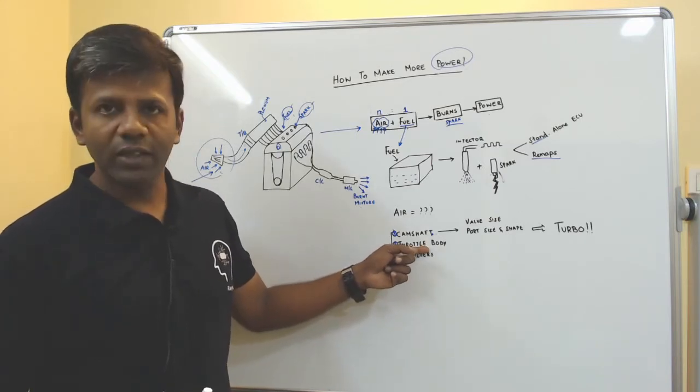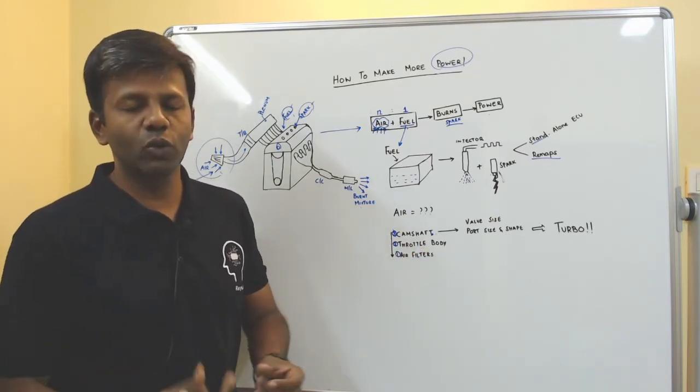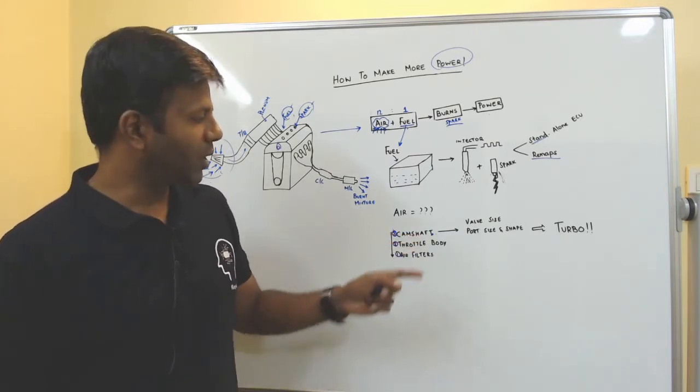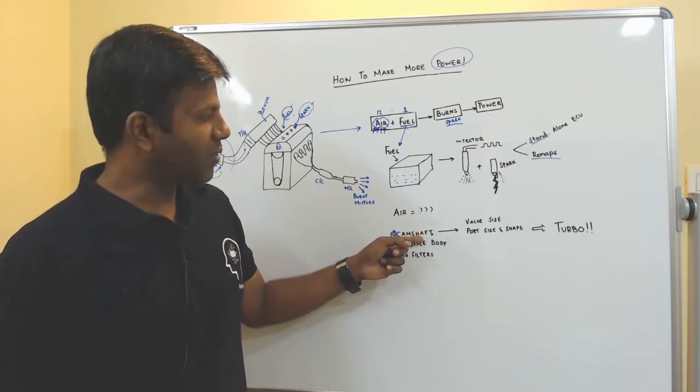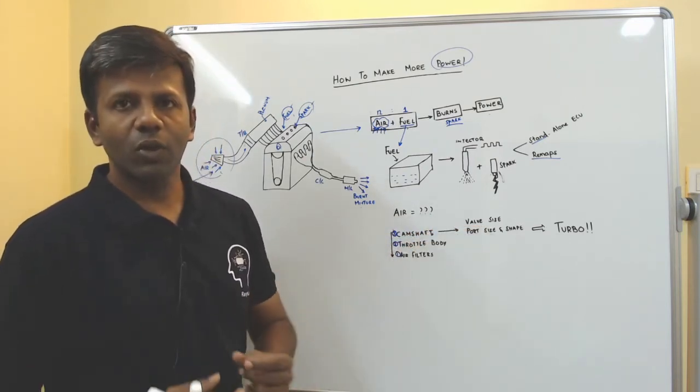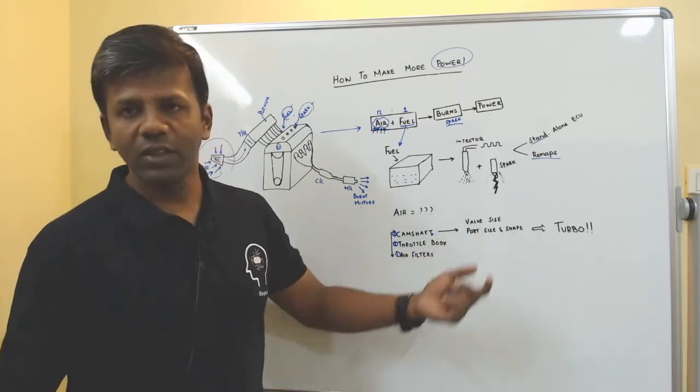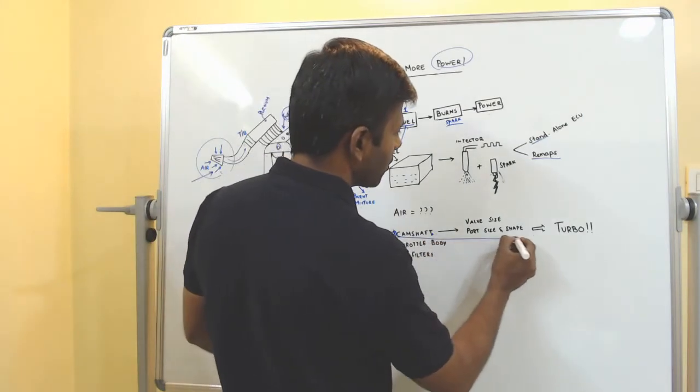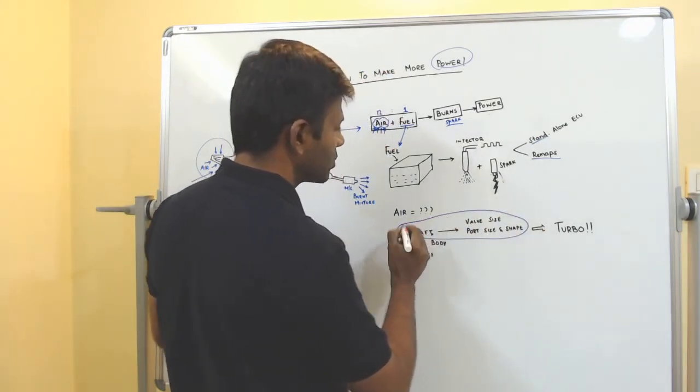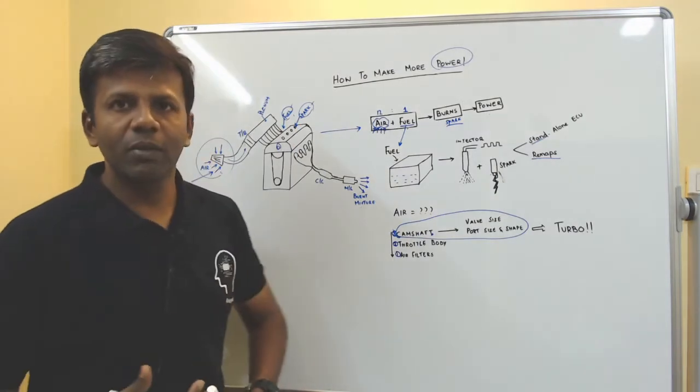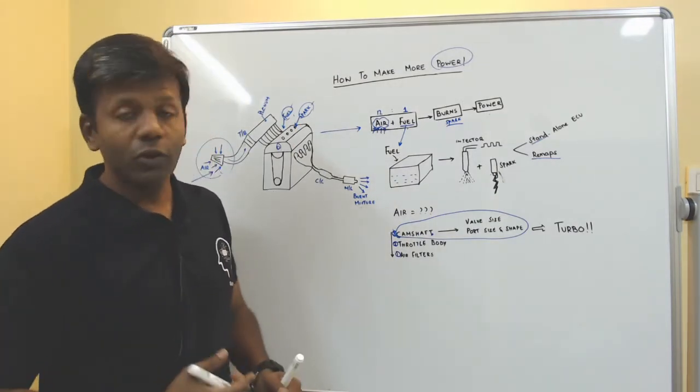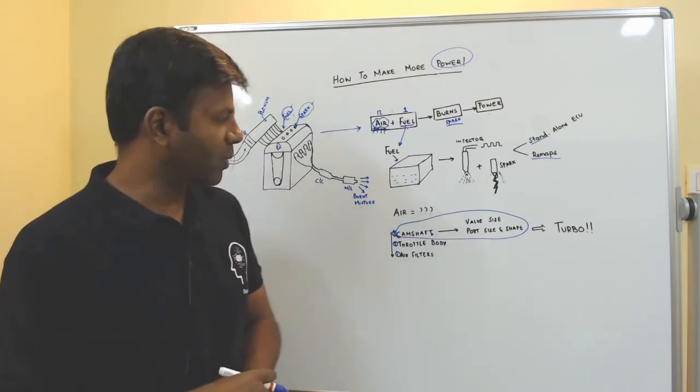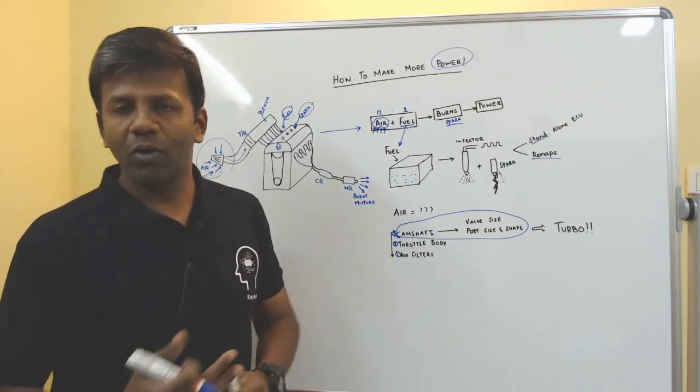Throttle body will to a certain extent depending on how big it is or small it is. The most important parameter in defining that will be the camshaft. Not just a camshaft, but camshaft along with your valve sizes, what size of a valve you have, what is the port size and shape. So if you want to flow the most amount of air for a naturally aspirated engine, this is what is going to give you the maximum increase in the amount of air which can flow. Of course, why do you want to increase air? Because if you increase air, then you can correspondingly increase fuel and make more power. So this is what is going to give you the maximum amount of increase.